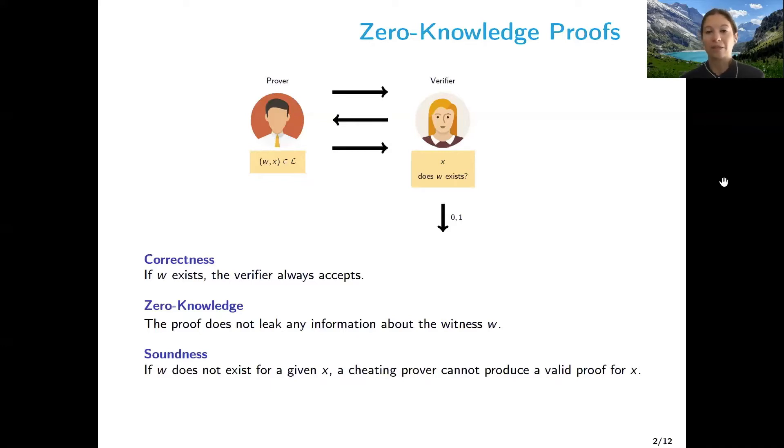And how this would work? This would entail a number of interactions at the end of which the verifier will output zero or one, depending on whether the proof has been accepted. So the verifier is convinced that the prover knows the secret or not.